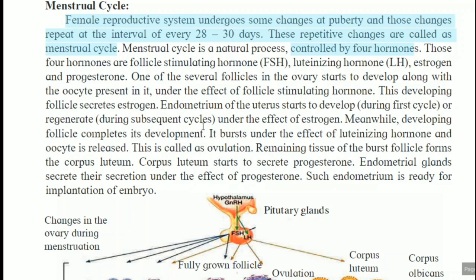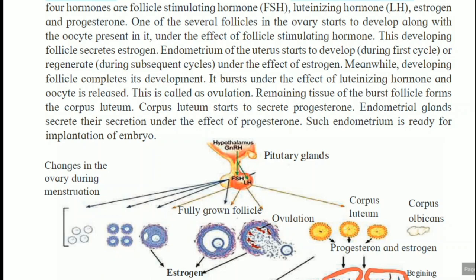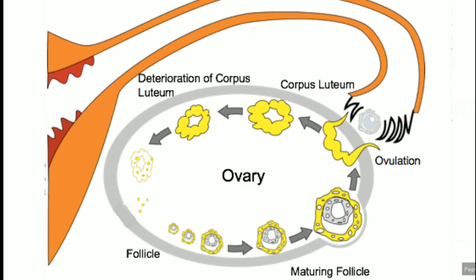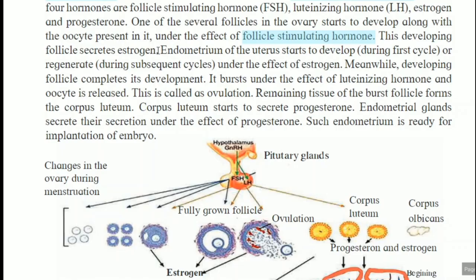Step by step, please listen carefully. One of the several follicles in the ovary starts to develop along with the oocyte present in it. Many follicles are there in the ovary — they develop the egg cell under the effect of follicle stimulating hormone, which stimulates the follicle to produce the egg cell. Second, this developing follicle secretes estrogen. Next, the endometrium of the uterus starts to develop or regenerate under the effect of estrogen.